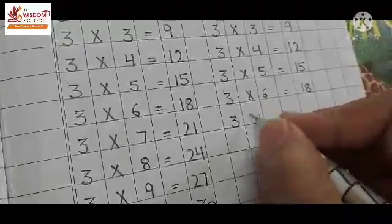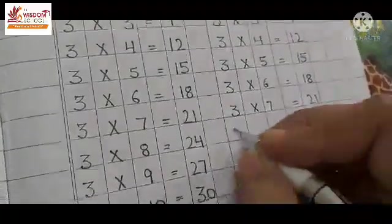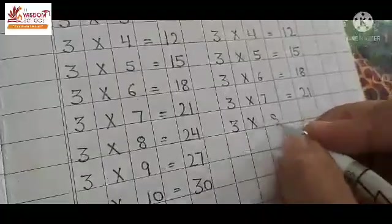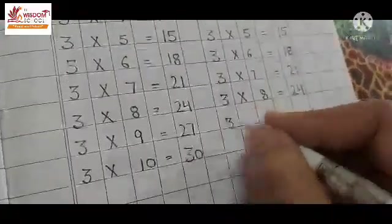3 times 7 is 21. 3 times 8 is 24. 3 times 9 is 27.